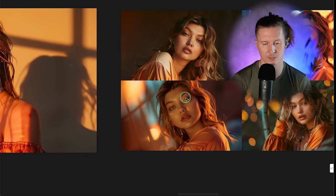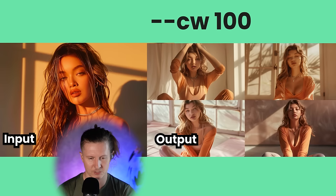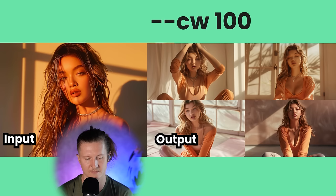Let's take a look at an example of how that affects the output image. Here is an influencer or character I was working on — it's a cross between Sydney Sweeney and Kylie Jenner. This is maintaining the character weight at 100, so you can see that the clothing is very consistent,